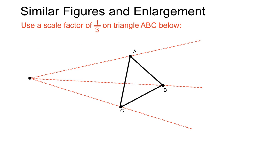So here's an example where we're not necessarily making things bigger. If we use a scale factor of one third on this triangle, let's see what happens here. We've got the original ABC, which is rather big.